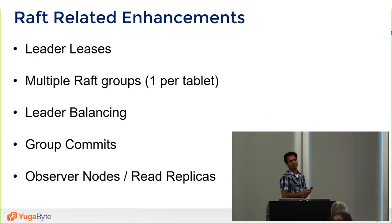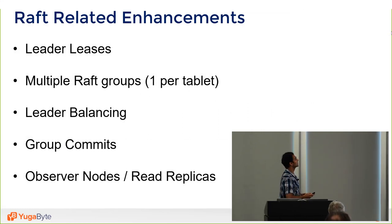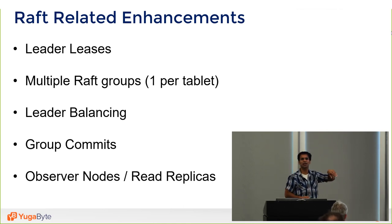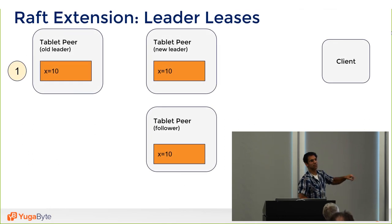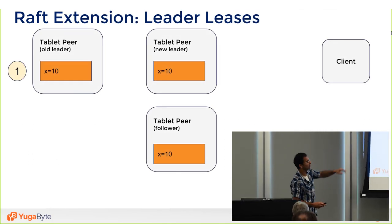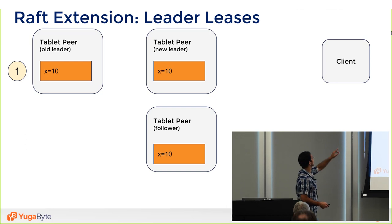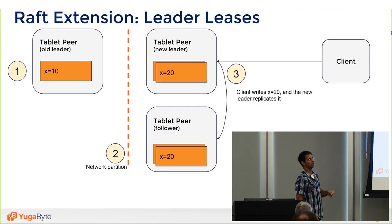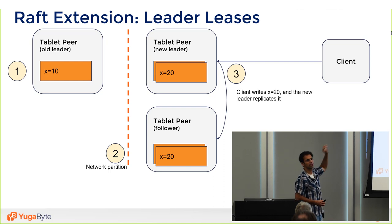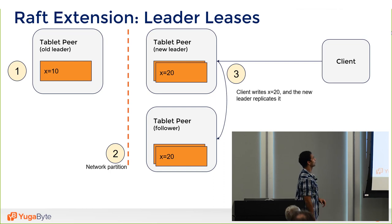There are also Raft enhancements, including leader leases. NoSQL databases often don't talk about leader leases. Consider: you have replicated data x=10, and the current leader gets partitioned. A client updates the new leader: x=20. But the old leader, still thinking it's the leader, says x=10. If the client asks the old leader the value of x, it gets back 10 — that's a problem most NoSQL databases don't address, often explained away as eventual consistency.